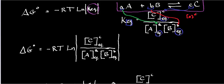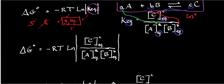For however many reactants and products you have, this is the expression you use. The stipulation, however, is that solids are not included in this expression, and liquids are not included either. What you do include are gases and things in the aqueous phase. So if, for instance, D moles of D was a solid, it would not be included, and you'd just have C over AB.